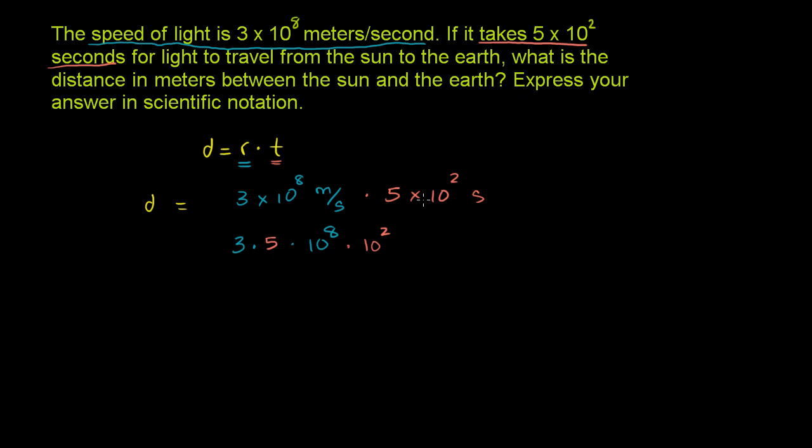And let's see what happens to the units. You have meters per second times seconds. The second in the numerator, second in the denominator, they cancel out. And you're left just with meters. And that is nice, because our answer needs to be in meters, the distance in meters between the sun and the earth.